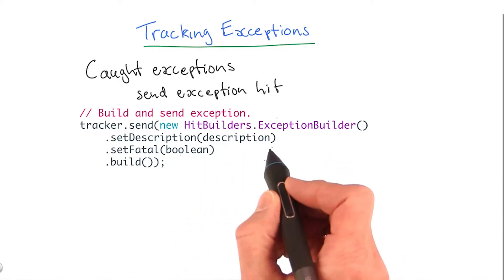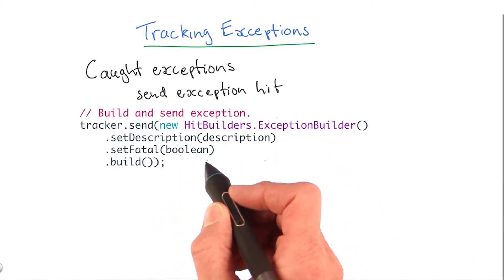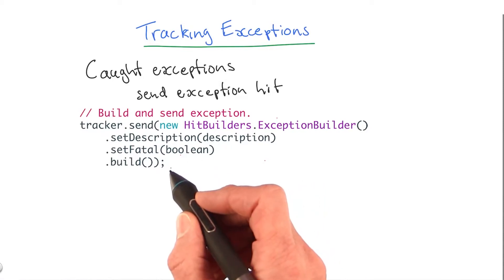You set the description, and you set fatal, whether or not it's fatal, and that's a Boolean. Then you build the hit and send it.